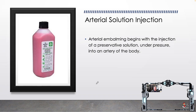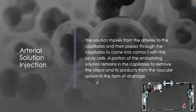Arterial embalming begins with the injection of a preservative solution under pressure into an artery of the body. The solution moves from the arteries to the capillaries and passes through the capillaries to come into contact with the body cells. A portion of the embalming solution remains in the capillaries to remove the blood and its products from the vascular system in the form of drainage.